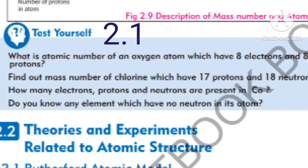Assalamualaikum. Today I am going to discuss Test Yourself 2.1 of Chapter 2: Atomic Structure. The first question is: what is the atomic number of an oxygen atom which has 8 electrons and 8 protons? The atomic number equals the number of protons, so its answer is 8.